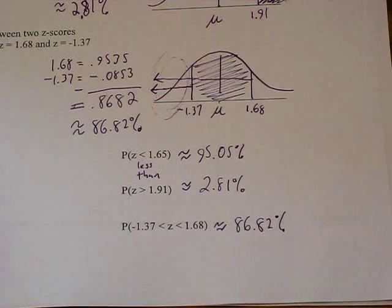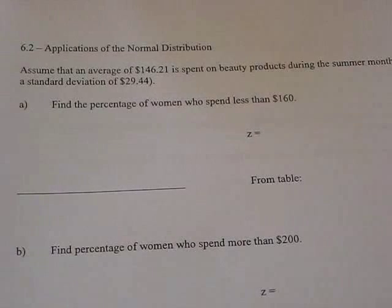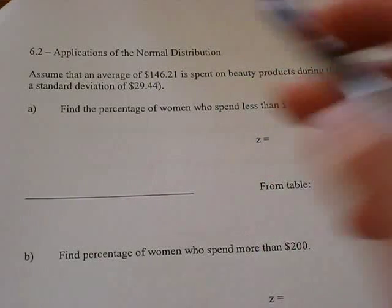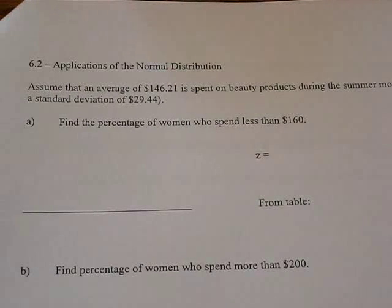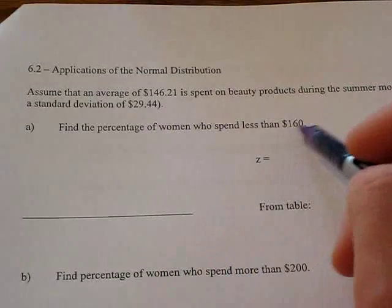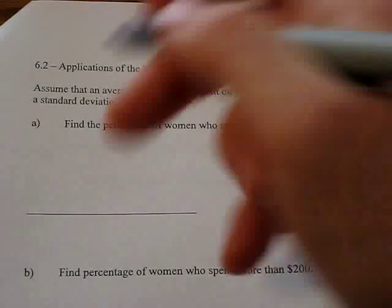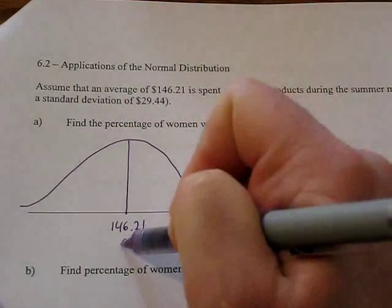Now the next section, which is section 6.2, really has you do these three things in the context of a problem. So for example, this is the application of the normal distribution. I pulled this from the book and I also added some more data myself here. But this data said that an average of $146.21 is spent on beauty products during the summer months with a standard deviation of $29.44. Well, what we're going to have to do is try to find our z-score and then look at the table and figure out, what is that possibility that women spend less than $160? And yes, this survey was surveying women. You may want to try to pause the video at certain spots here and then see if you can do the problem. The first thing you should do is maybe make yourself a little graph to try to explain what's going on. You know the average is $146.21, which is zero standard deviations away from itself.